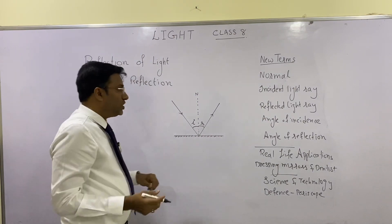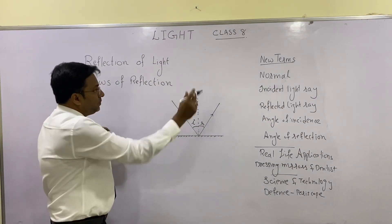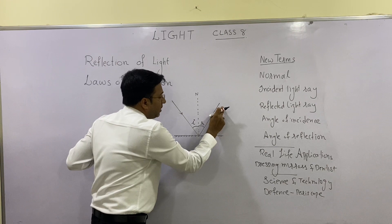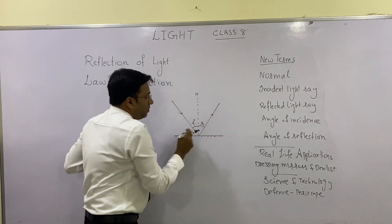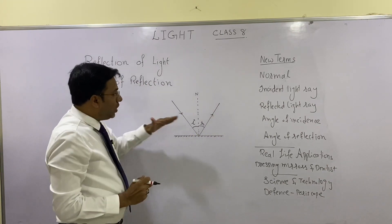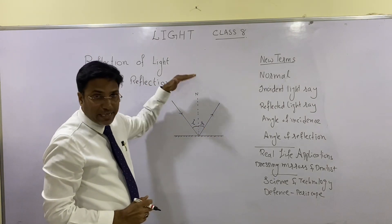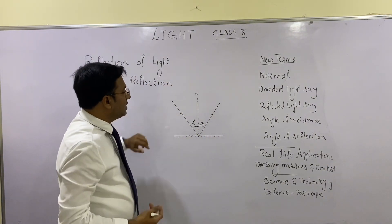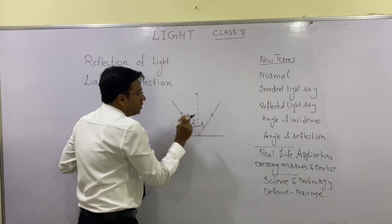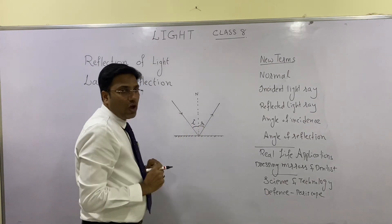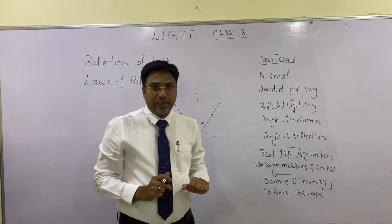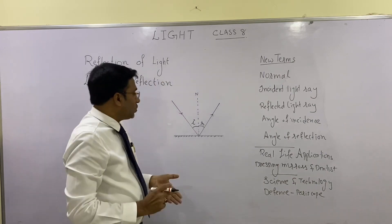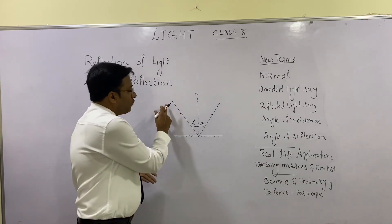Now the laws of reflection. There are two laws of reflection. The first law states that the incident light ray, reflected light ray, and normal all lie in the same plane. The second law states that the angle of incidence is equal to the angle of reflection.